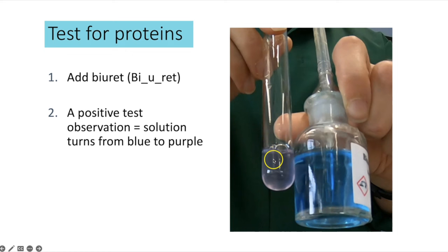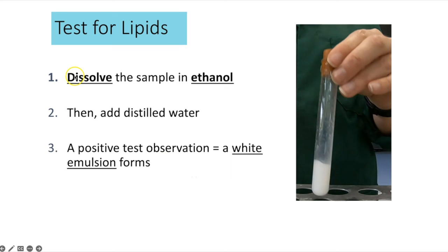To test for lipids, first dissolve your sample in ethanol by adding ethanol and shaking. Then add distilled water. If a lipid is present you get a white emulsion — you must state the colour 'white' and describe it as an emulsion, which is a thicker substance, not a precipitate.